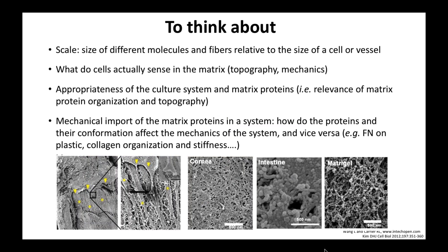There are a couple of things I want you to think about. Please think about scale — the size of different ECM molecules relative to each other and relative to cells or vessels. Think about what cells are actually sensing in the matrix: mechanics, topography. The scale at which you look at the matrix gives you different topographies. This cell in a blood vessel, outlined by yellow arrowheads, and the asterisks show the matrix. When you blow up the picture you can see how heterogeneous and varied the topography of this particular matrix is.